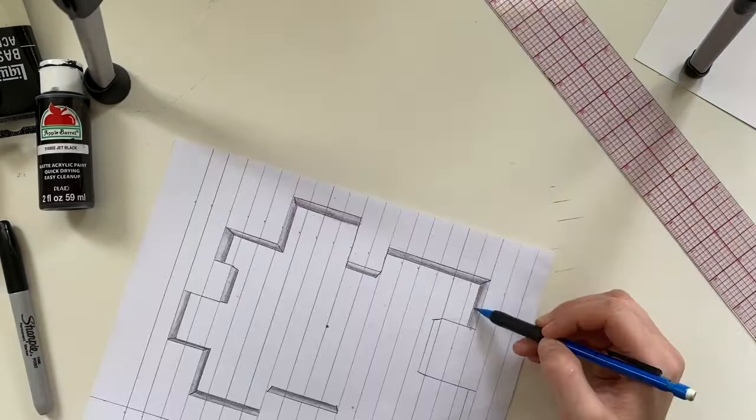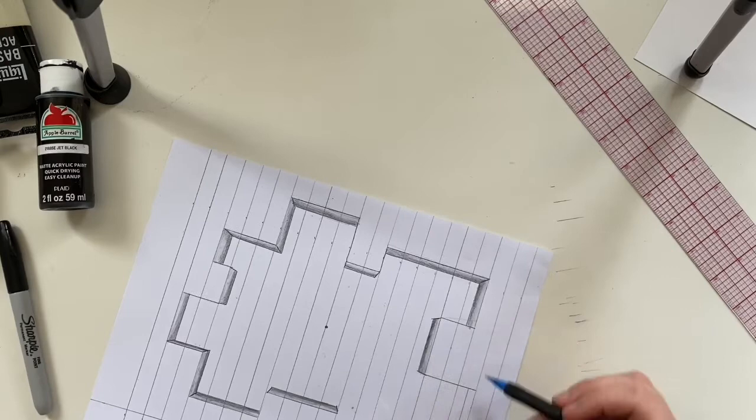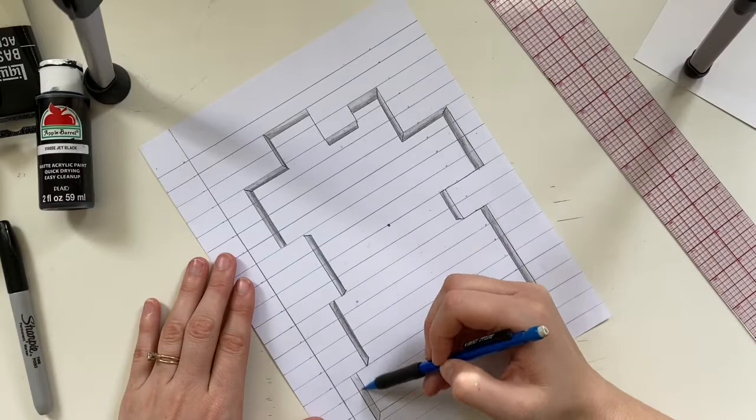We want the darkest point to be where our black hole, where the space is going to be, so that we can create an illusion that it's darker in the background. So you're just going to go around and shade all of your edges.